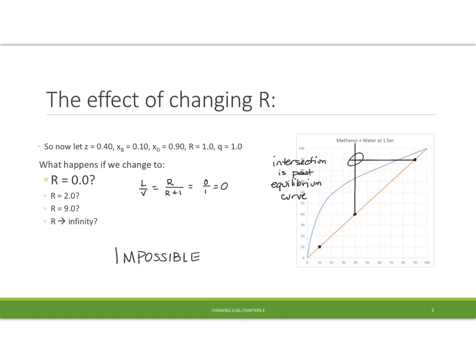Okay, so you've had a chance to do this — let's look at the various cases. Some of you looked at the case where R is equal to 0. When R is equal to 0, L over V is equal to 0, so the line is horizontal and the intersection is past the equilibrium curve. We can't cross the equilibrium curve — nature does not allow that. So therefore this case is impossible.